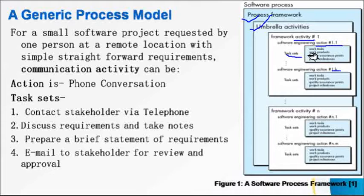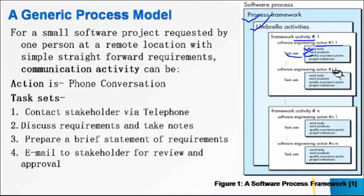Task sets contain: work tasks — the things we actually have to do; work products — the result of following that task; quality assurance points — which help us understand whether the work done is correct or not; and project milestones which we achieve after completing those tasks.